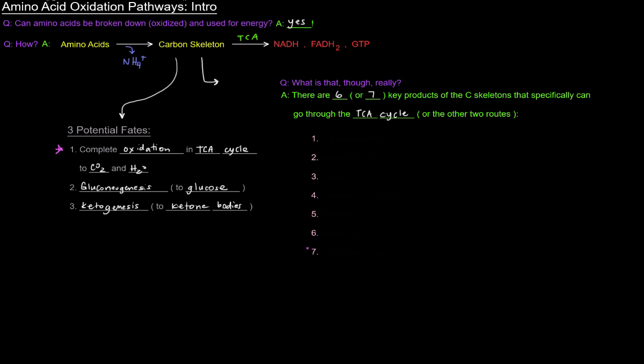And those six or seven key products are something that we really need to keep in mind. One of them is alpha-ketoglutarate. Another is succinyl-CoA. Third is fumarate. Fourth, oxaloacetate, or OAA. Fifth is pyruvate. Sixth, acetyl-CoA. And the seventh is acetoacetyl-CoA.